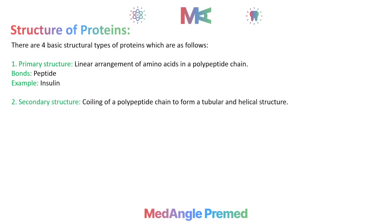If the primary structure is a linear arrangement, a coil is formed, and a helical or tubular structure is formed. When this helical structure is formed,